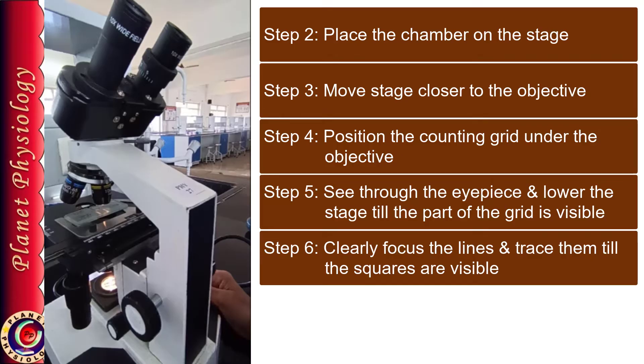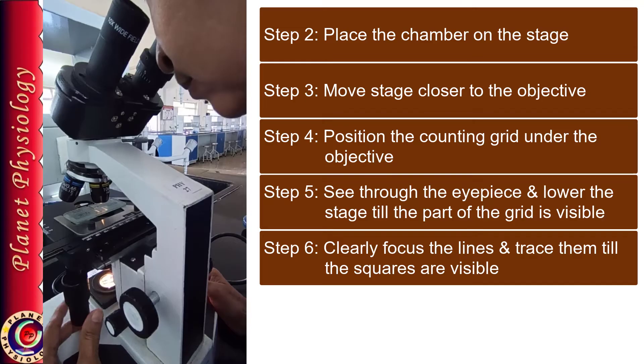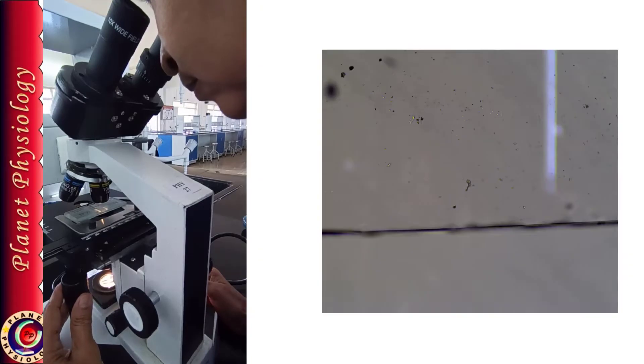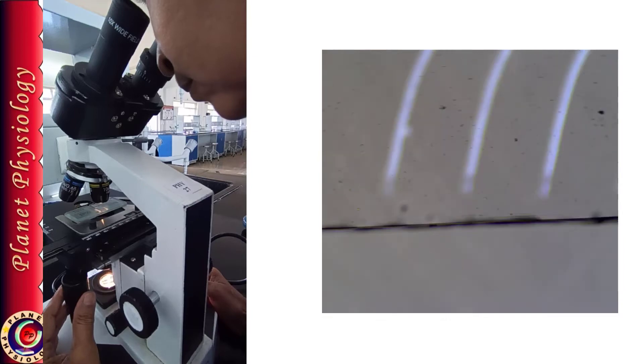Now only use mechanical stage screws to move the chamber. Now how to move? Whatever lines are visible, we have to trace those lines till we get the squares.